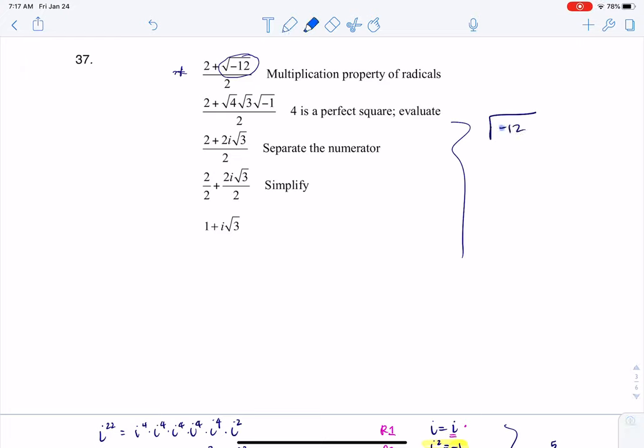As soon as you see that negative under the radical, I can take the imaginary number out. Then it comes down to, can I simplify the square root of 12? 12 can be broken into 4 and 3, and 4 is 2 squared.